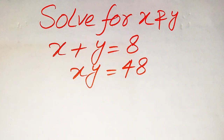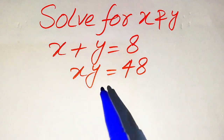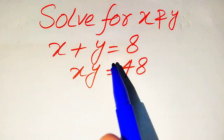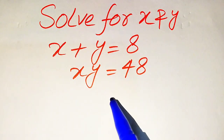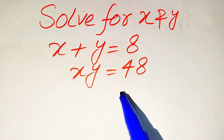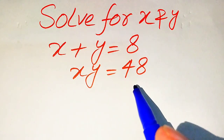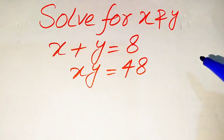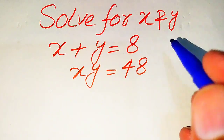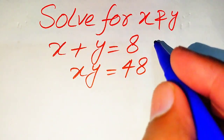Hello everyone. How to solve this problem for the values of x and y, if we have x plus y is equals to 8, and x times y is equals to 48. We solve this problem for all the values of x and y.